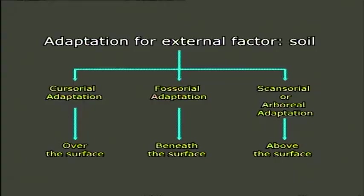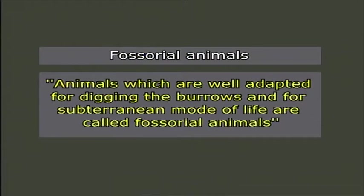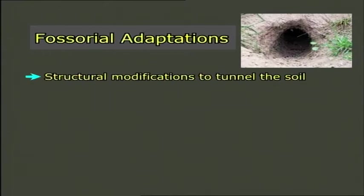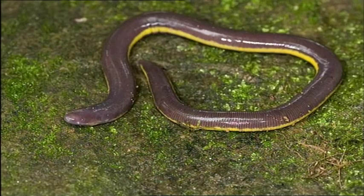Now let us get information about fossorial adaptation as the second type. Animals which are well adapted for digging burrows and for a subterranean mode of life are called fossorial animals. These animals burrow either for their food or simply for retreat. Zoologically they are primitive, defenseless, and unambitious animals. Fossorial adaptations show different gradations, and as a consequence different degrees of structural modifications are encountered. To tunnel the soil, the body contour is either cylindrical, for example ichthyophis, or spindle-shaped.